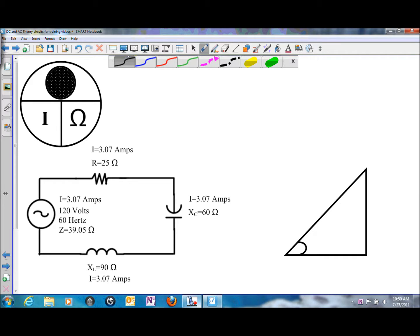So we can solve all three of those. Voltage drop on the resistor will be I times R, or 3.07 amps of current flow times 25 ohms of resistance.